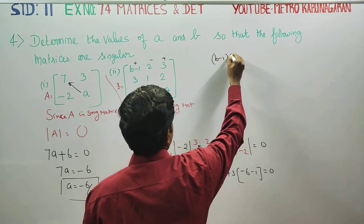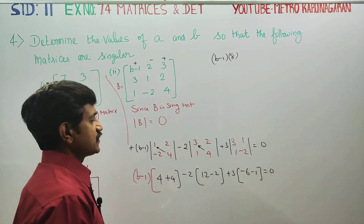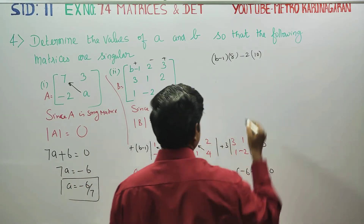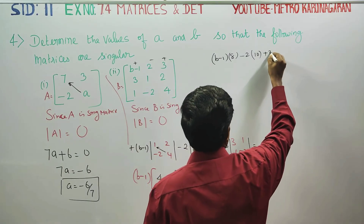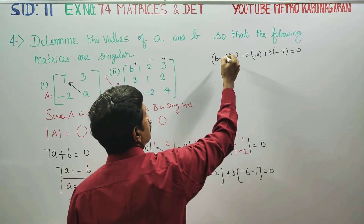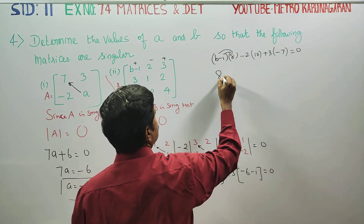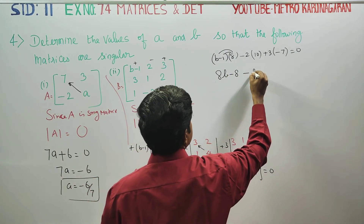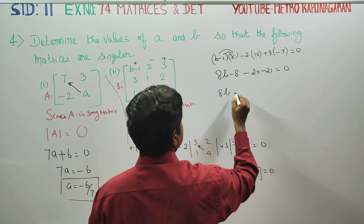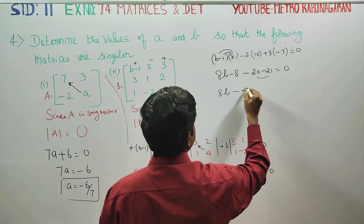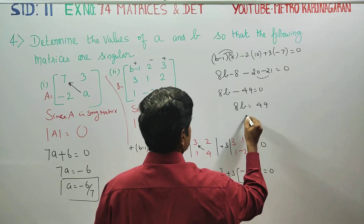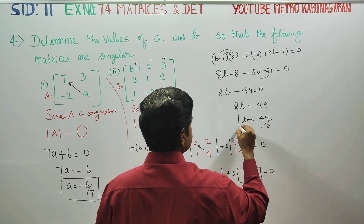Expanding: (B minus 1) into 8 gives 8B minus 8. Minus 2 into 10 gives minus 20. Plus 3 into minus 7 gives minus 21. So 8B minus 8 minus 20 minus 21 equals 0. That gives 8B equals 49, so B is equal to 49 by 8. That is your final answer.